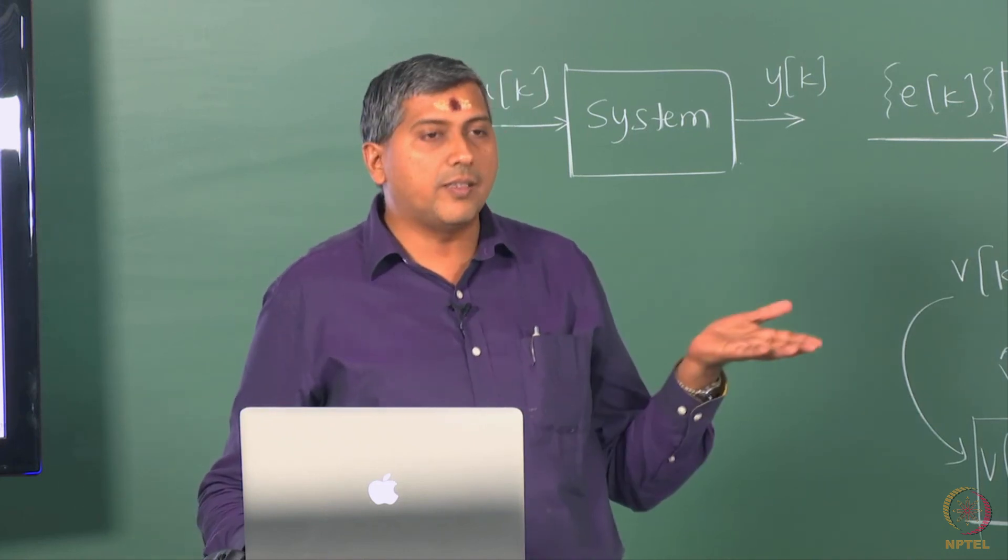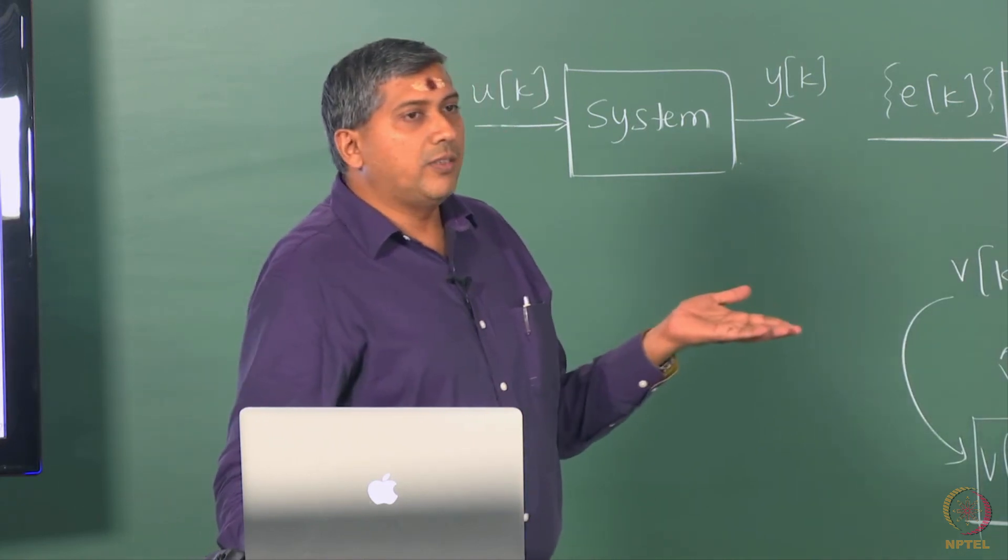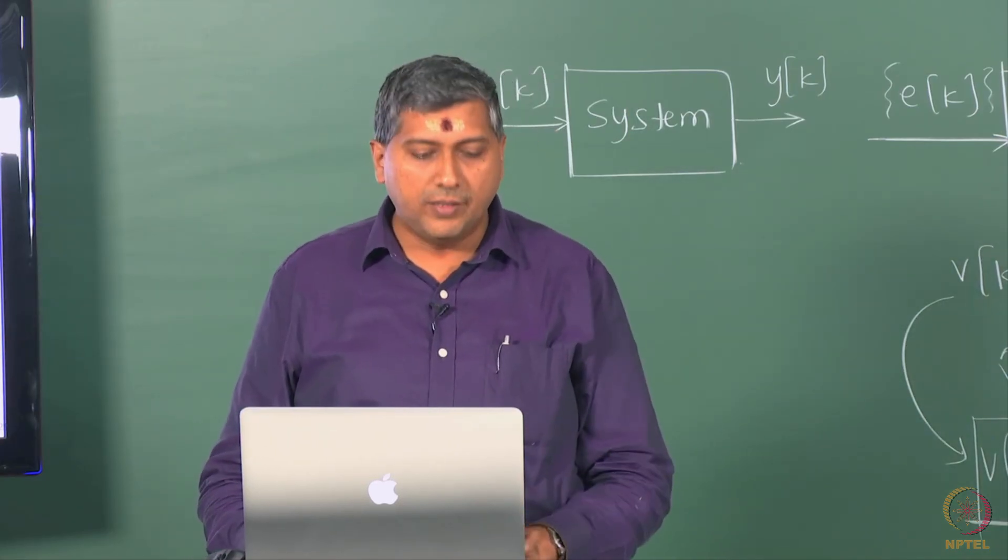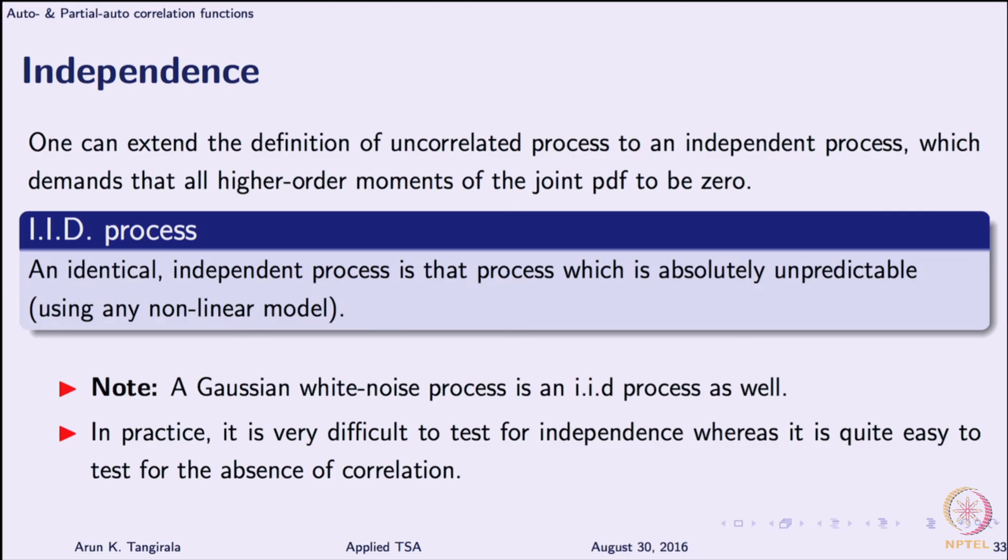Of course, you know that idea is used in bootstrapping and surrogate data analysis and so on. We do not go into that type. So as I said, IID process is a stronger version of white noise process where independence is assumed and a Gaussian white noise process is IID. So, in some sense it is safe to work with a Gaussian white noise process from this view point as well. So, the bottom line is we will always assume unless otherwise stated the white noises that we encounter that we assume are all Gaussian white noise processes unless otherwise explicitly stated.